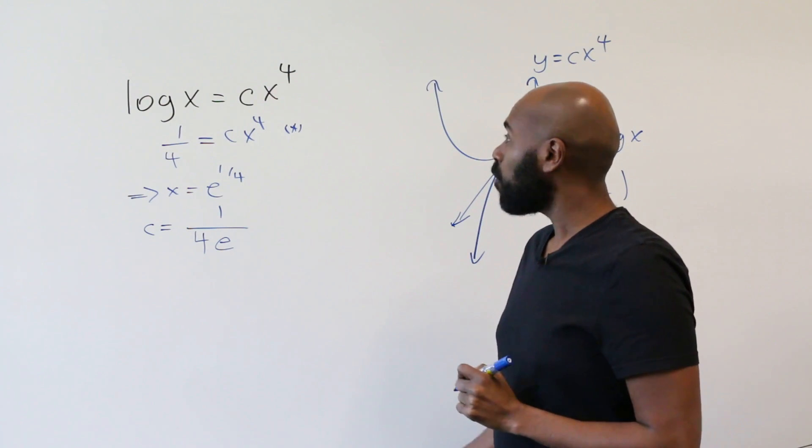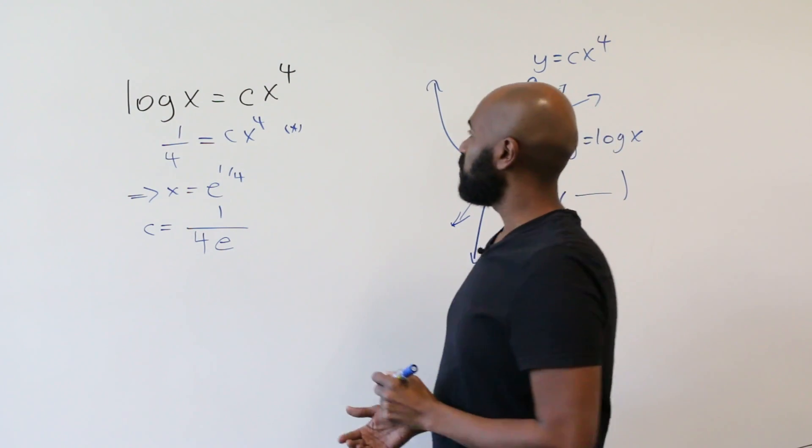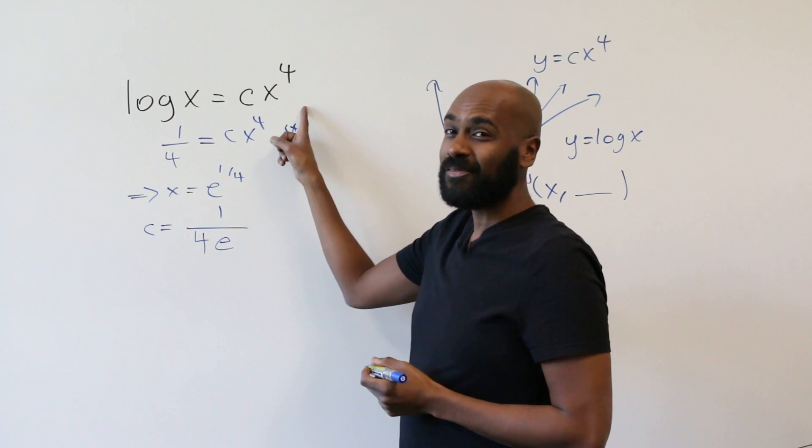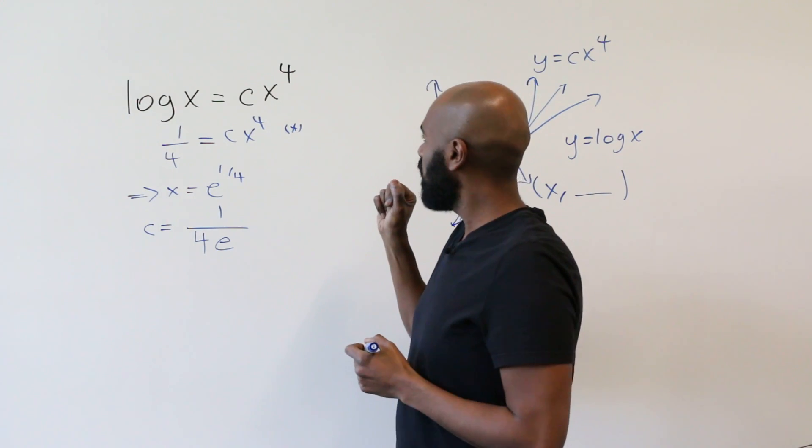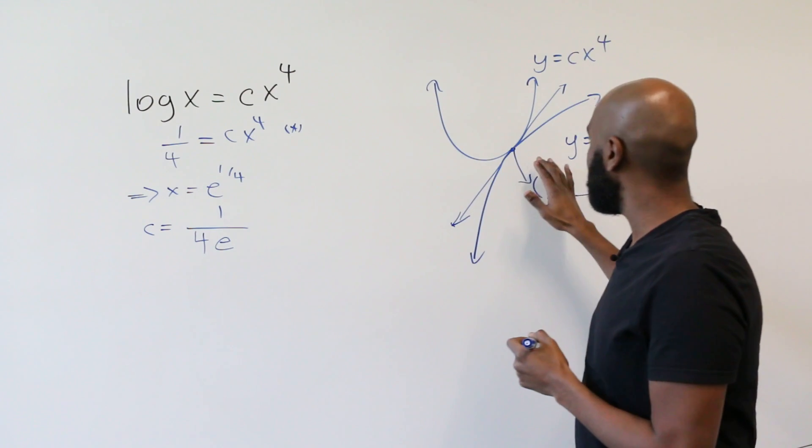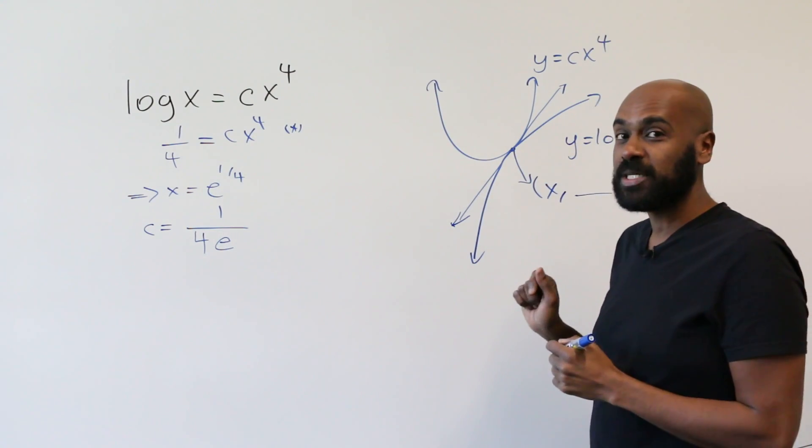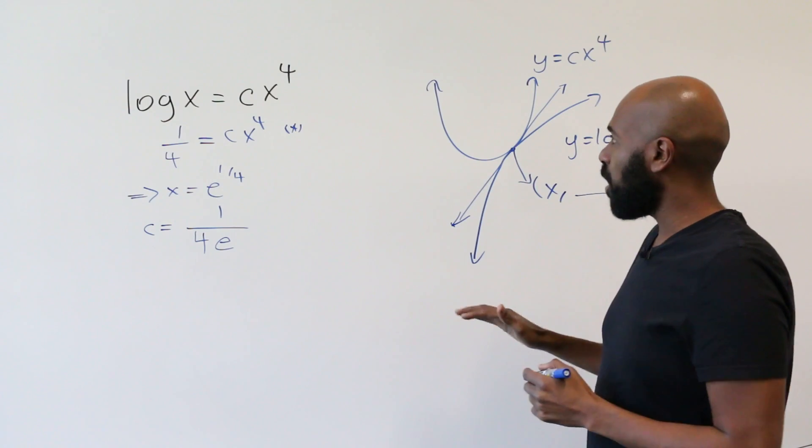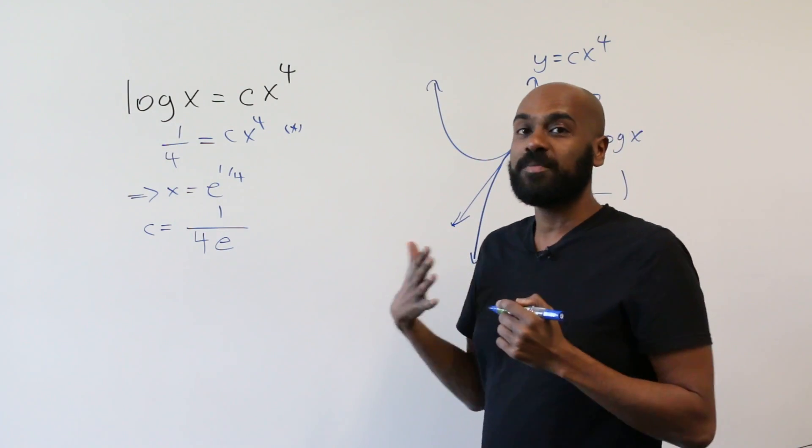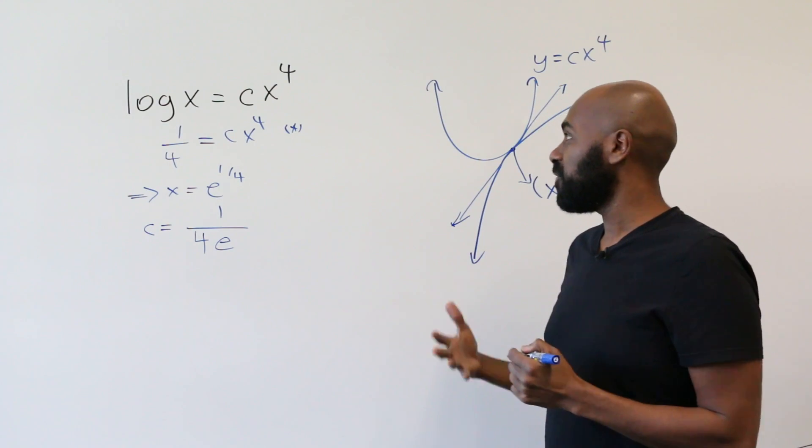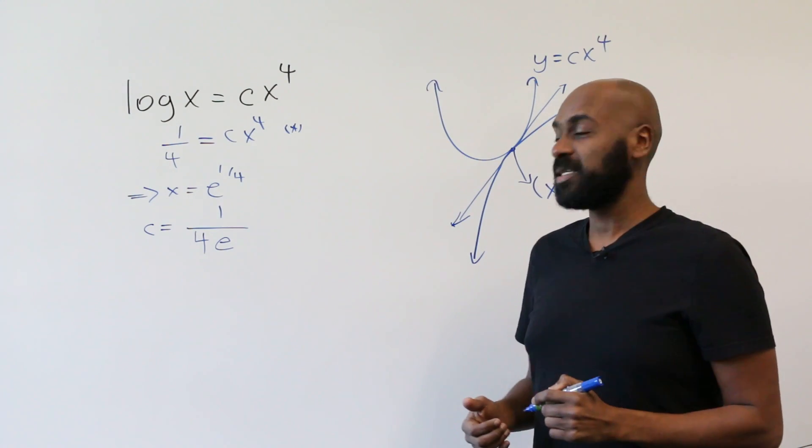So I think the moral of the story here is when we start this problem, it seems like we don't have enough information to go about figuring out what this value of c is. But once we look at the geometry of what's going on, we get more intuition as to what we can do. And that's a big part of the GRE Math Subject Test is moving between different modes of mathematics in order to figure out enough information to answer the problem that is at hand.